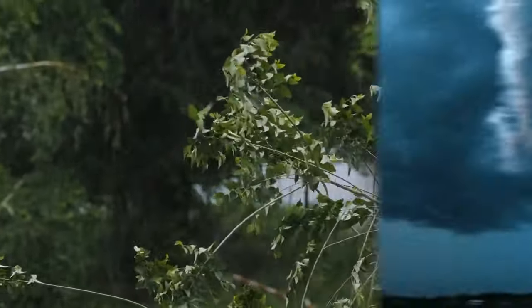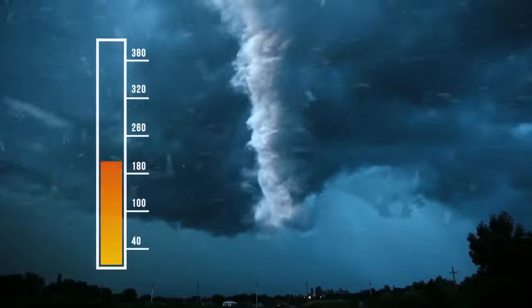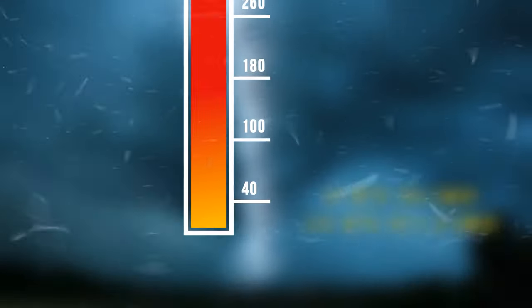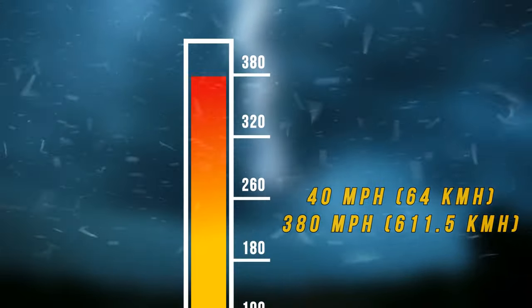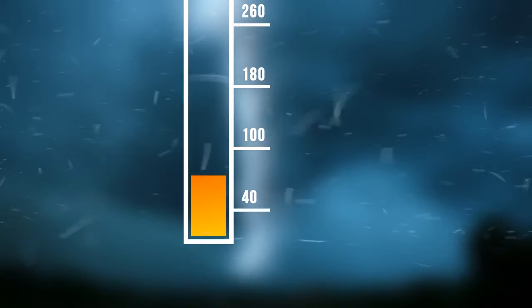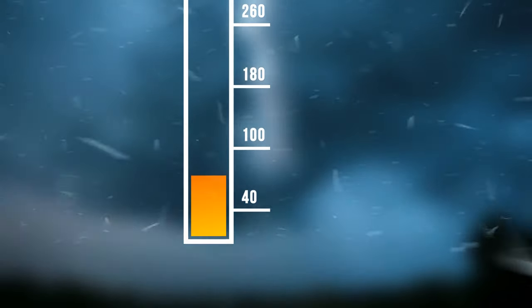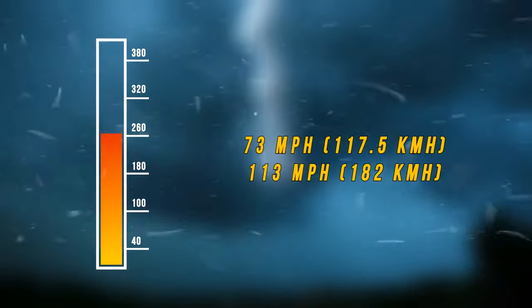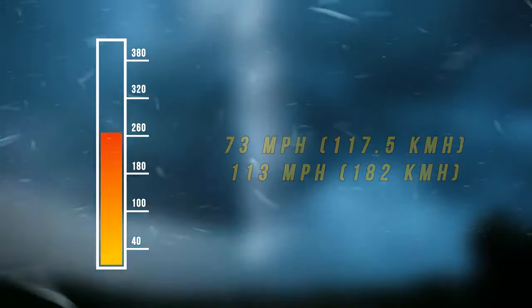If we compare a Derecho to an ordinary tornado, the latter has six levels of strength, from 40 to 380 miles per hour. So, a Derecho is kind of like a small, average-level 1 to 2 tornado. Usually, its speed is within the range of 73 to 113 miles per hour.